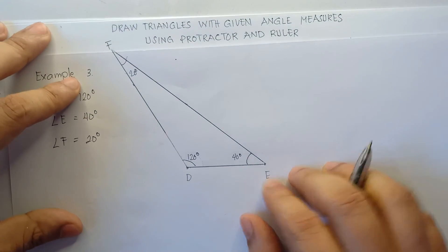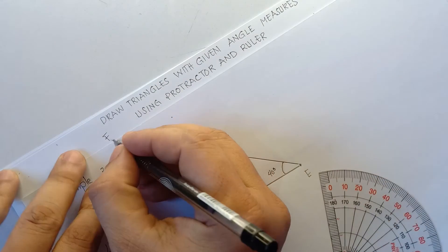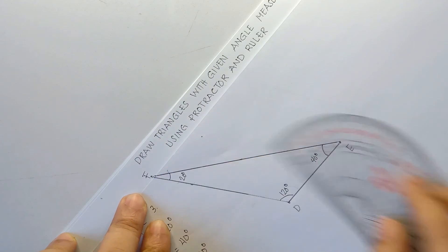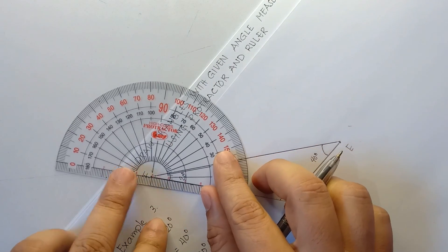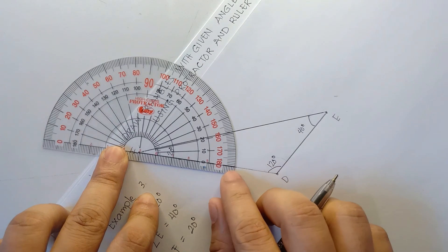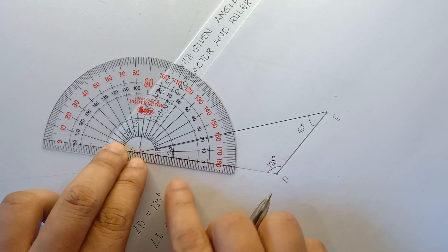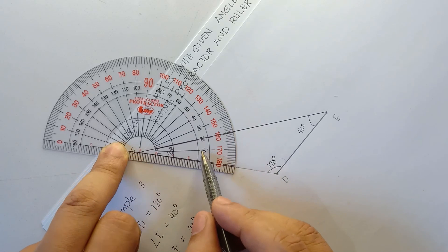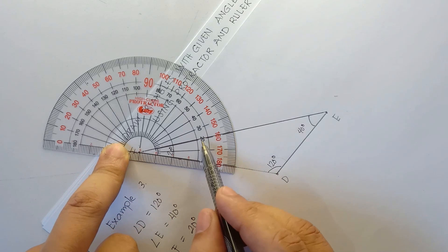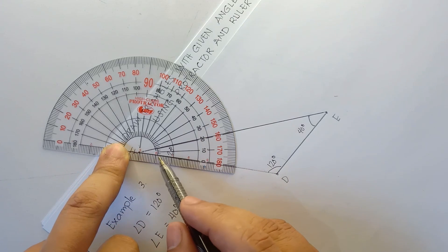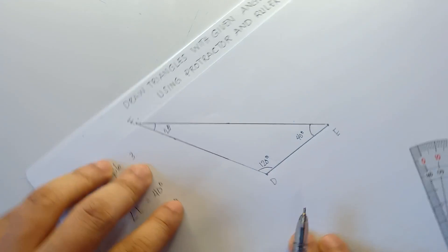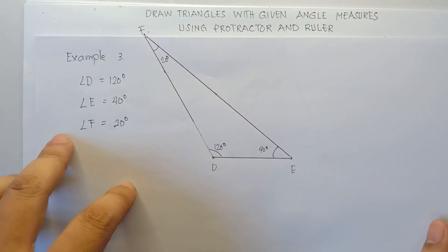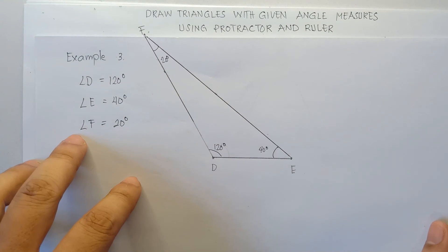Let's check angle F. We align the center part of the protractor at point F, align 0 in the horizontal line — exactly 20 degrees: 10, then 20. That's how you draw triangles with given angle measures using the protractor and the ruler.